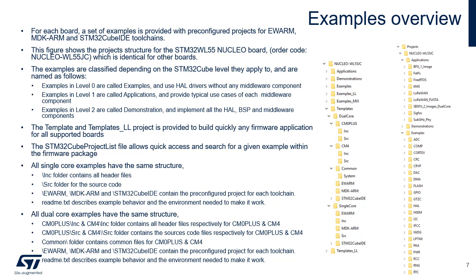The STM32 Cube project list file allows quick access and search for a given example within the firmware package. All single-core examples have the same structure: the Inc folder contains all header files, the Src folder contains the source code, and the EWARM, MDK-ARM, and STM32 Cube IDE folders contain the pre-configured project for each toolchain. A README text file describes the example behavior and the environment needed to make it work.